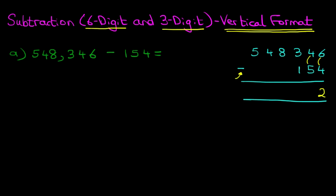Moving on to the tens, we have got 4 minus 5. Because 4 is less than 5, we cannot do this. So what we are going to do is take 1 from the digit on the left, the 3. Let's cross out 3. 3 minus 1 is 2, and the 1 we have taken from here we are going to move to the tens. So the tens column now reads 14 minus 5. 14 minus 5, the answer is 9.